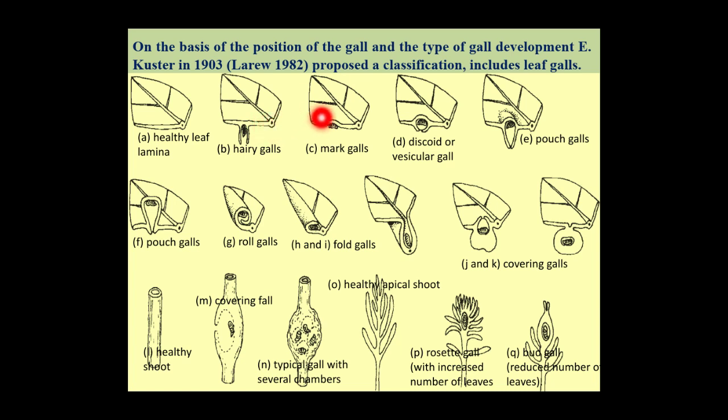The second type of gall is Mark gall. In this type of gall, the eggs are deposited on the plant surfaces. Then the first instar larvae penetrates the tissue and it proliferates inside the tissue and surrounds it completely.